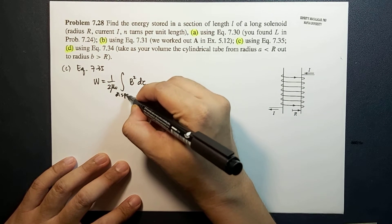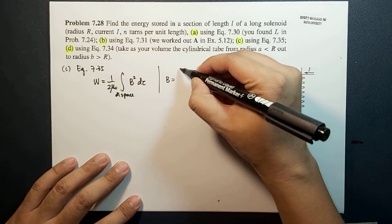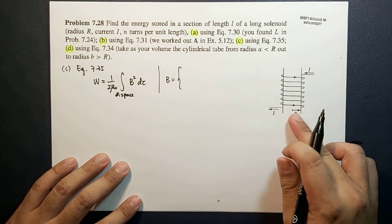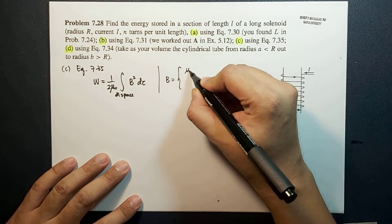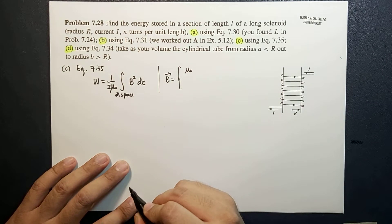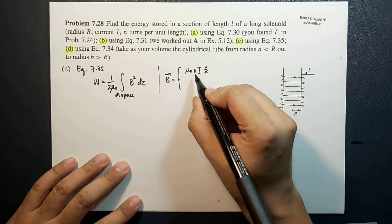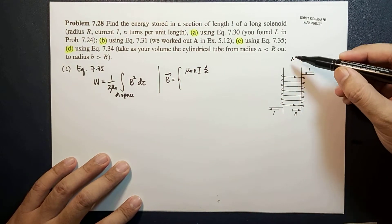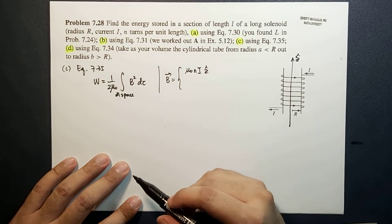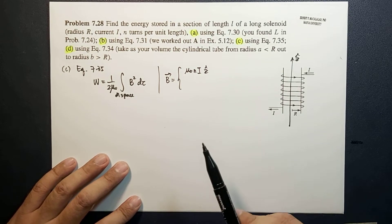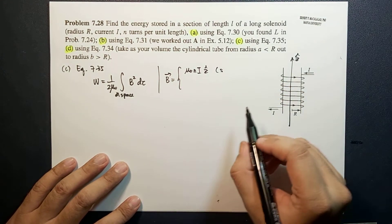Let's recall that for a solenoid the magnetic field is different inside versus outside. When it is inside, the magnetic field is constant and equal to mu-naught n I z-hat, where z-hat is this direction. This is constant, as we already found in chapter five.